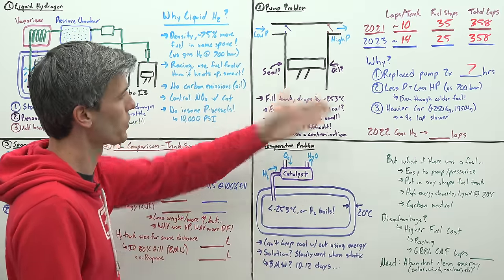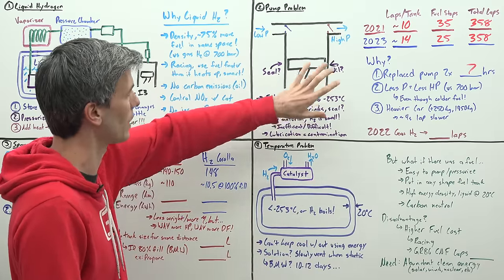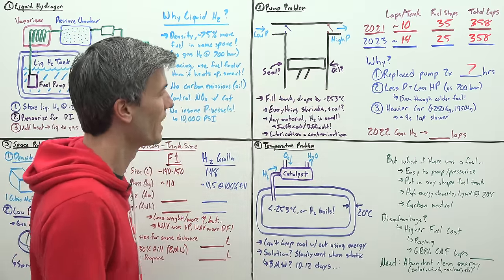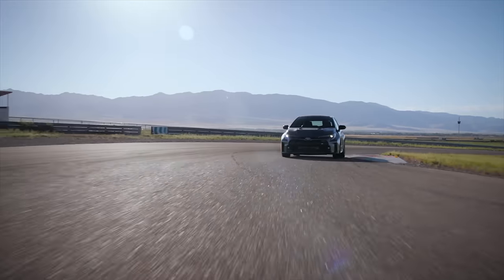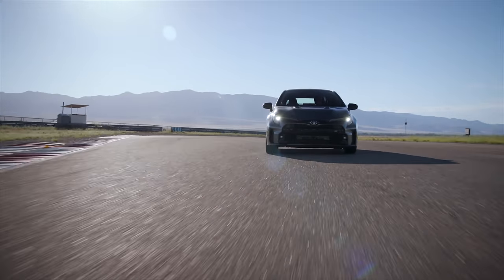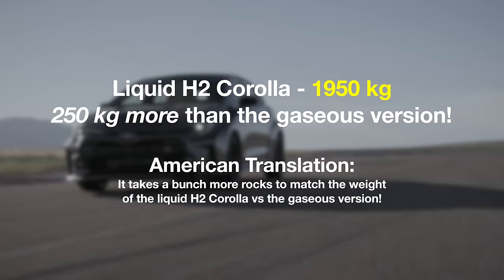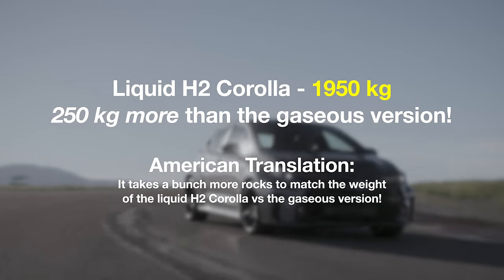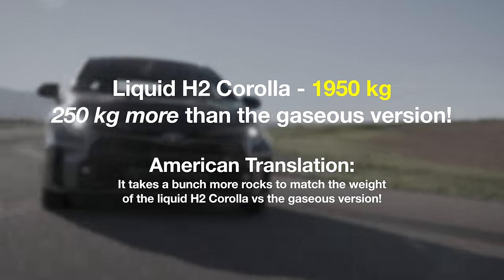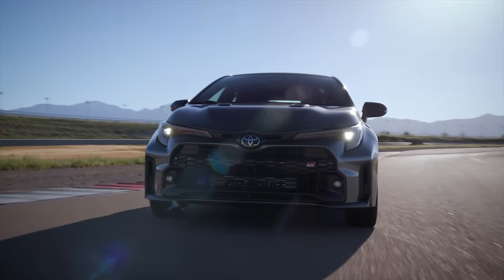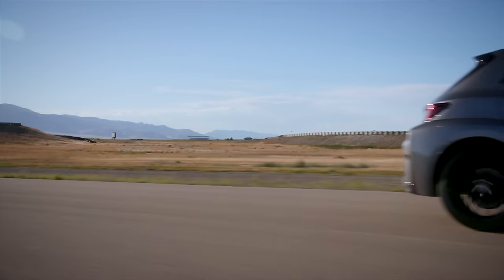As a result of the added equipment for this liquid hydrogen GR Corolla, it is a significantly heavier car, plus 250 kilograms over the gaseous version, at 1950 kilograms. This is a very heavy vehicle, so between having less power and being heavier, it's about four seconds per lap slower which hurts it in overall laps completed.